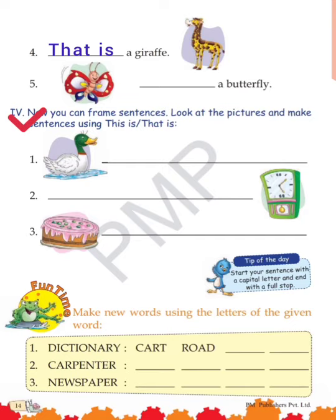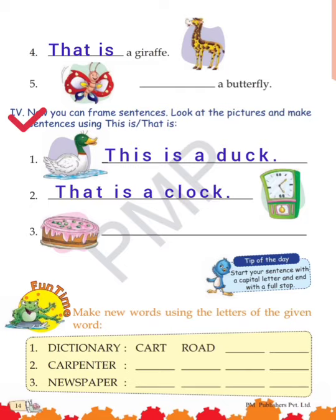The picture is drawn before the line begins — line ki shuruaat mein hi picture draw hai. 'This is' humare paas ke liye use karte hai, and 'that is' dur ke liye. So: 'This is a duck'. Second one — 'That is a clock'. Third one — 'This is a cake'.